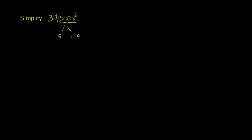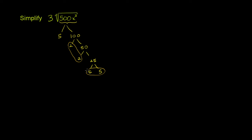100 is 10 times 10. But if you didn't know that, you could keep factoring it. You could say 100 is 2 times 50, 50 is 2 times 25, and 25 is 5 times 5. You would see the perfect squares here — two 2's, so a 2 times a 2, and a 5 times a 5. So 100 is 10 times 10, or equivalently 2 squared times 5 squared. Either of those lets you break this down.